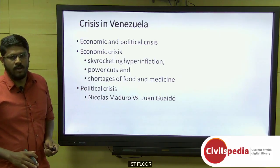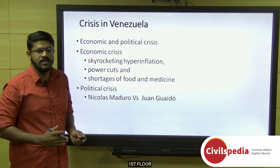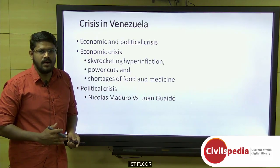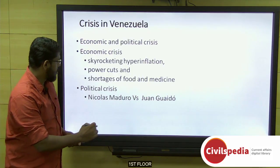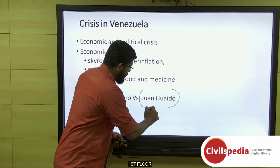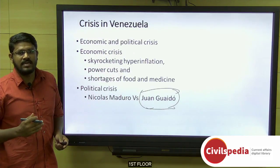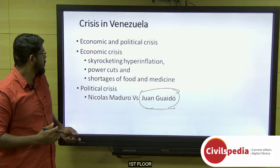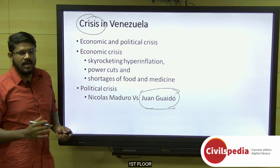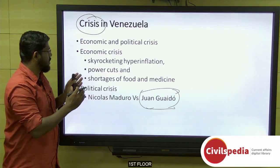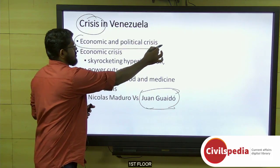Next, we look into the main topic — the crisis in Venezuela. On January 23rd, a leader named Juan Guaido declared that he is the acting president of the nation. The Venezuela crisis at present is not just an economic crisis but also a political crisis.